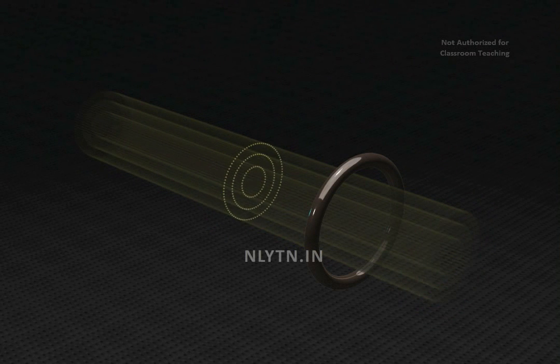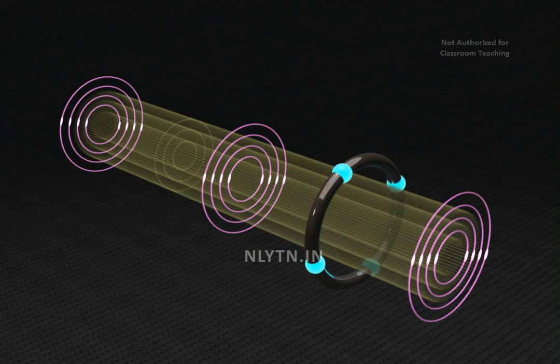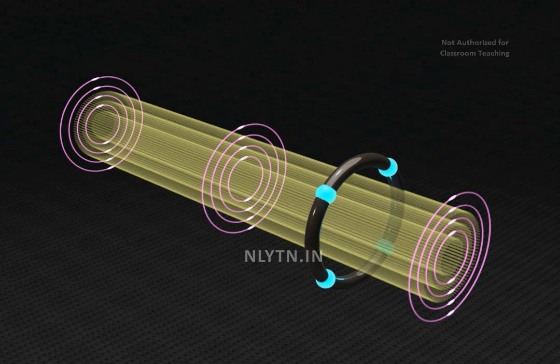Now, if we place a conducting coil in a changing magnetic field, then because of the induced electric field, charges in the coil experience an electric force and thus a current is established in the coil.